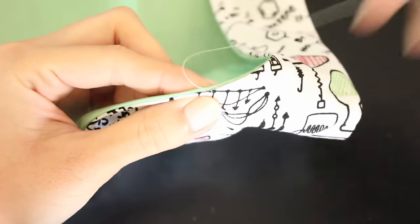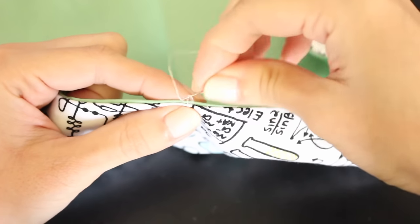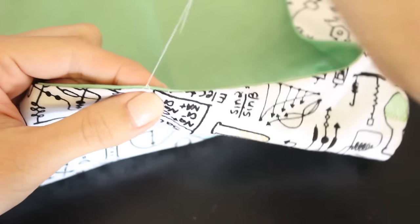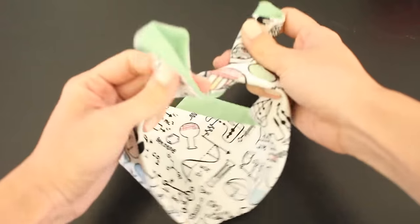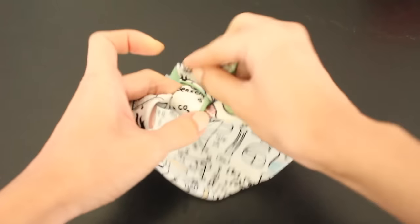Next, close the opening with a ladder stitch. Pull the bandana over, tie the ends, and you're done.